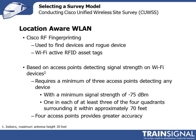To determine the location of RFID tags or rogue devices, the signal must be heard from multiple locations. Cisco defines that the device must be heard by at least three different access points, each with a minimum receive signal strength of -75 dBm. Each of those three access points must be physically located in three of the four quadrants surrounding that device and must be within 70 feet of that device.